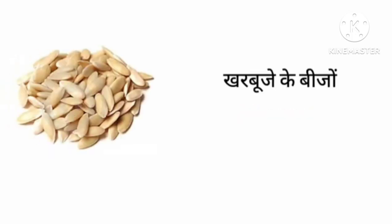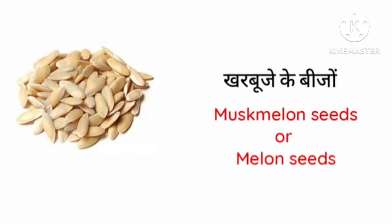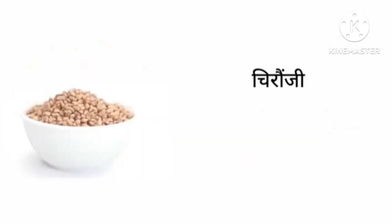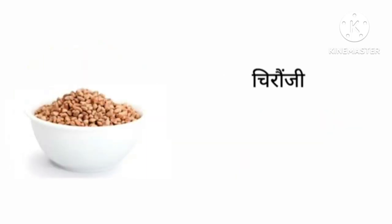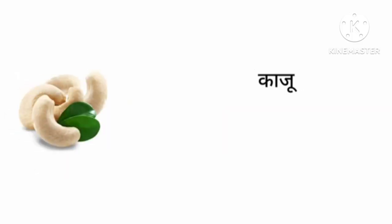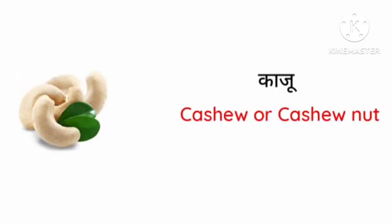Kharbujay ke beech. Kharbujay ke beech in English is musk melon seed, or you can say melon seed. Chironji. Chironji in English is char peanut. Kaju. Kaju in English is cashew or cashew nut.